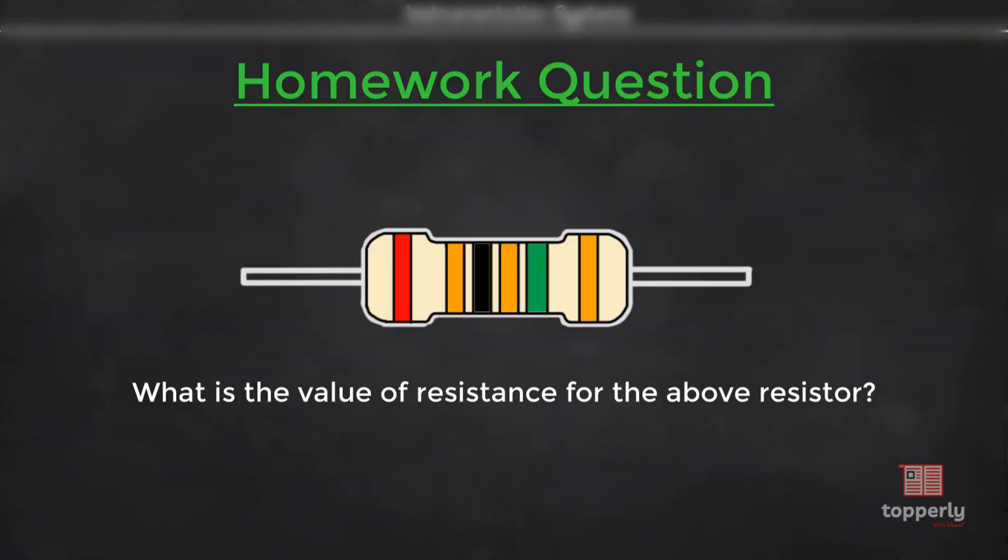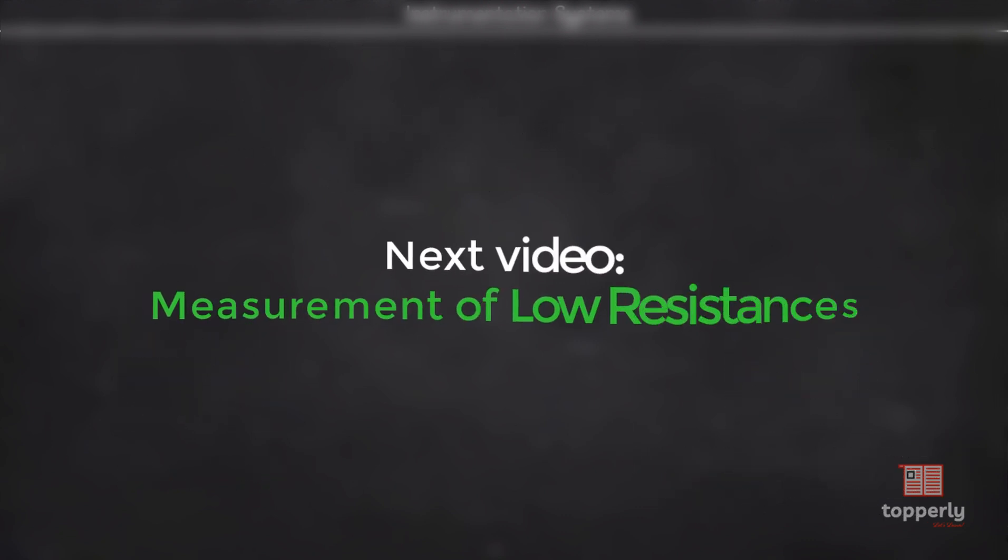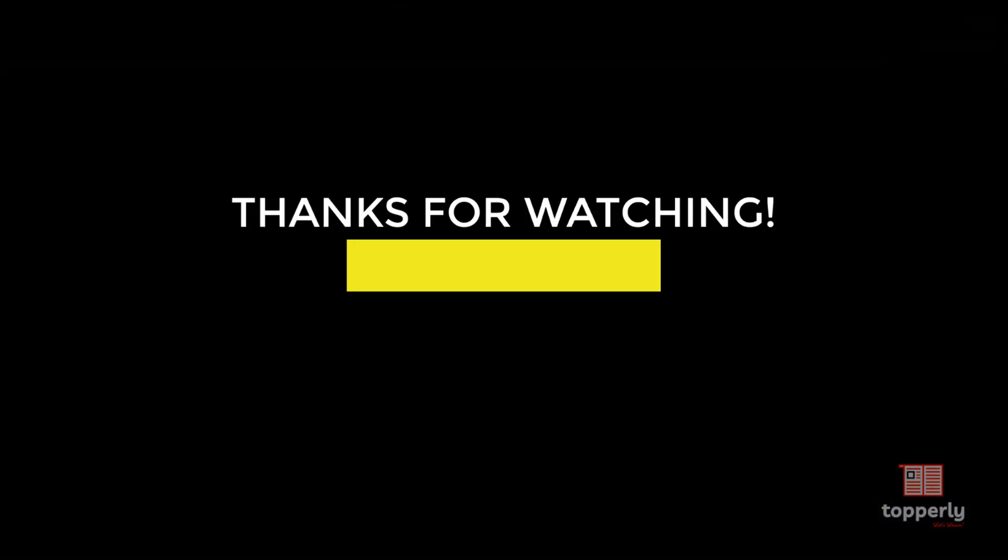So that's all for this lecture. To summarize, we have seen the definition of resistance and saw the qualities of a good resistor. Then we saw the color coding of resistors and how to obtain the resistance value from them. If you have any doubts, feel free to ask them in the comments so that either me or some other viewer can help you. Also, if you found the lecture useful, please like the video and also support us by subscribing to the channel. In the next video, we will see the different methods to measure resistances. Thanks for watching and have a nice day.